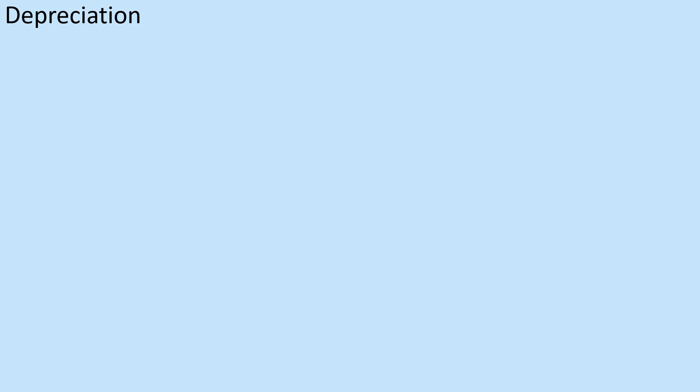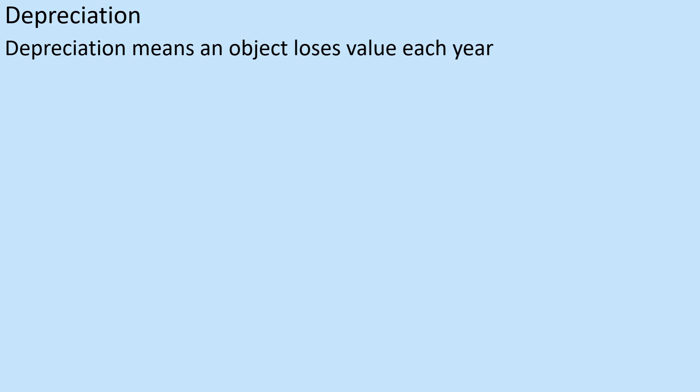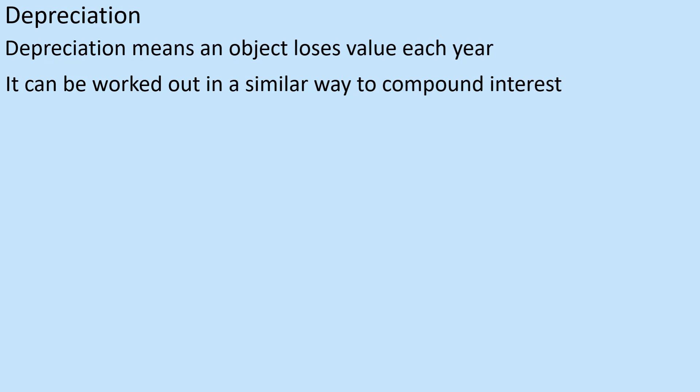So we looked at compound interest — that's obviously the numbers going up. What happens if the numbers go down? This is called depreciation. This is what happens to cars essentially — you buy a car and it depreciates in value. Depreciation means an object loses value each year, and it works out similarly to compound interest.